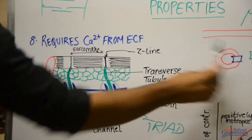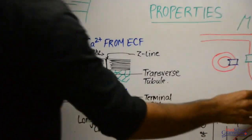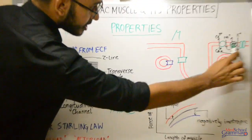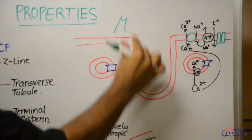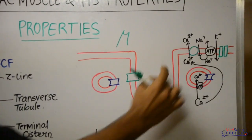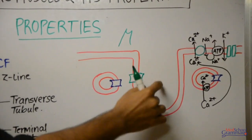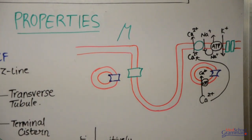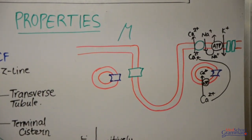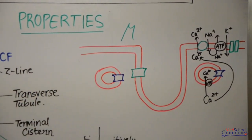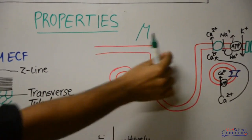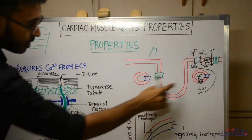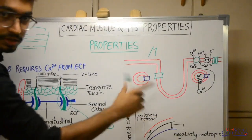In the transverse section, you can see the invagination of the sarcolemma forming the T-tubule. The terminal dilatations — the terminal cisterns — are visible on either side. This is a magnified view of a triad: the transverse tubule in the center and the two terminal cisterns shown as blue structures.